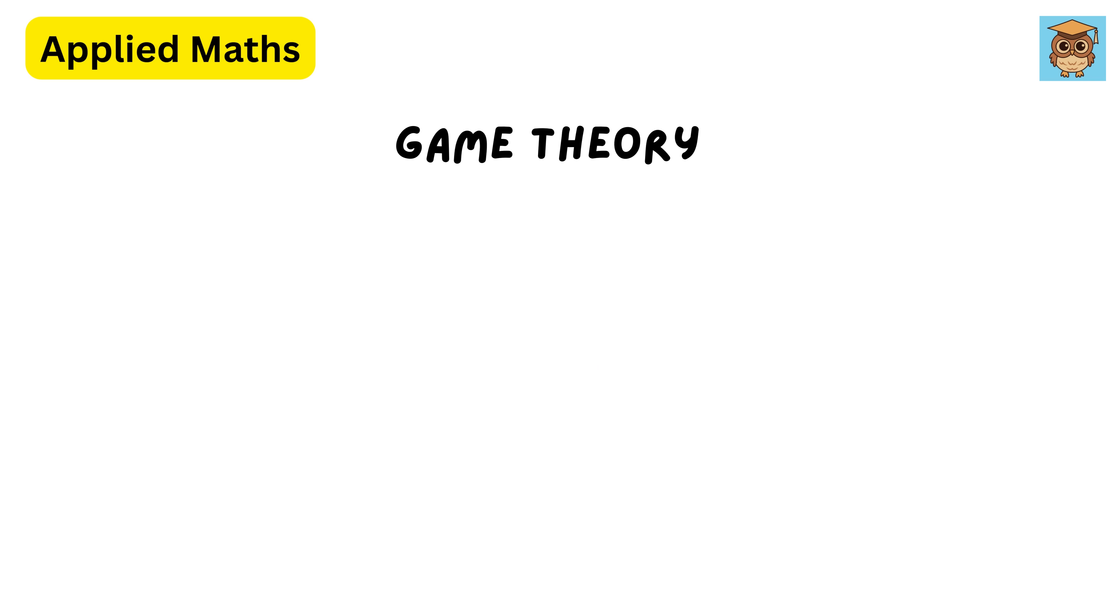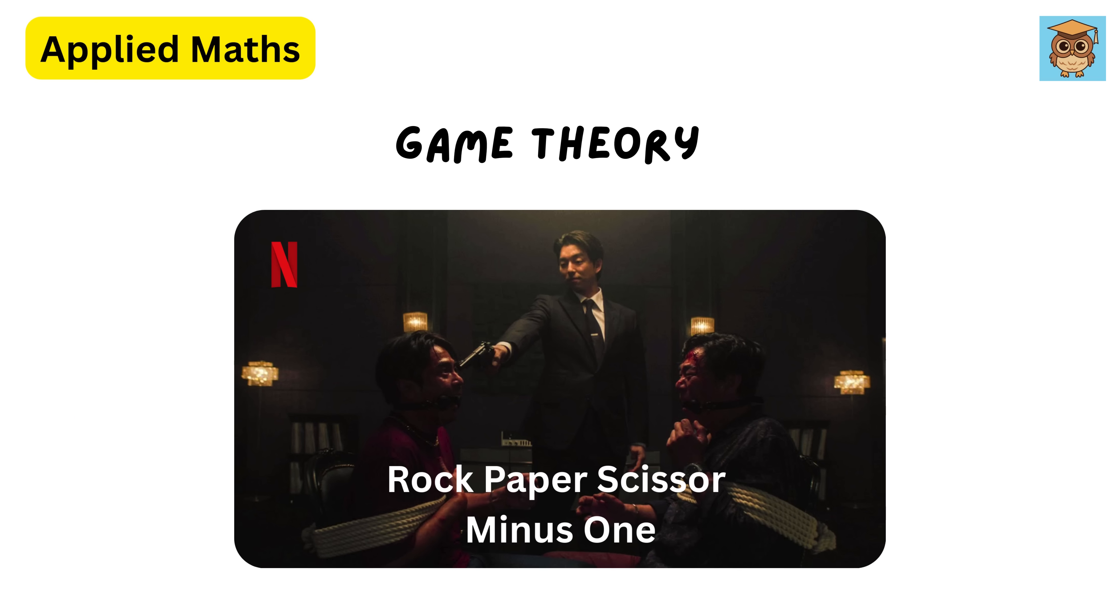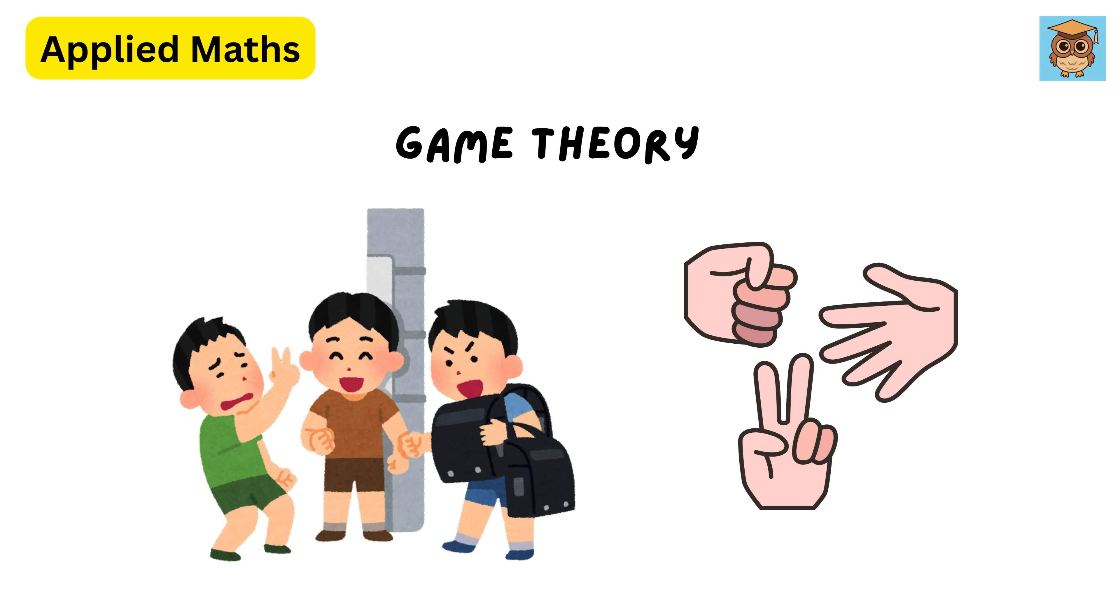Then we have game theory. Game theory isn't just about playing games. It's about making smart decisions in competitive situations. Each player has choices or strategies. The outcome depends on everyone's decisions, not just one person's, and the goal is often to maximize rewards or minimize losses.